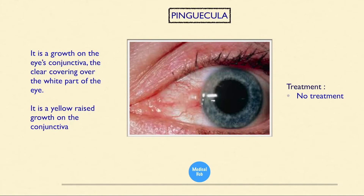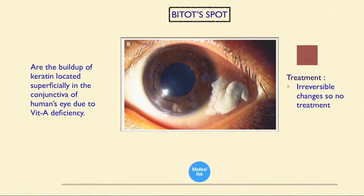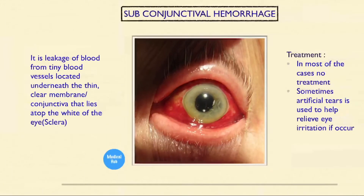This is pinguecula — a growth on the conjunctiva, the clear covering over the white part of the eye; it is a yellow raised growth on the conjunctiva. No treatment. Next are Bitot's spots — a buildup of keratin located superficially in the conjunctiva due to vitamin A deficiency; changes are irreversible, so no treatment. This is subconjunctival hemorrhage — leakage of blood from tiny blood vessels underneath the conjunctiva lying over the sclera. In most cases no treatment is needed; sometimes artificial tears are used to relieve irritation.